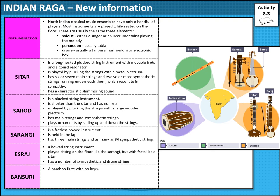Moving on to the instrumentation. There's quite a lot of information you haven't seen before — I'd advise pausing so you can make sure you know exactly how they sound. You'll be doing that on Focus on Sound in a second. North Indian classical musical ensembles have only a handful of players — they aren't made up of lots of people like Gamelan was. They're usually made up of a soloist, percussion and a drone. The melodic solo instruments include the sitar, sarod, sarangi, esraj or bansuri. Each has different characteristics — I've tried to lay them out on screen. If you have any questions, please email me. Pause the video now to understand a little more about each of those instruments.